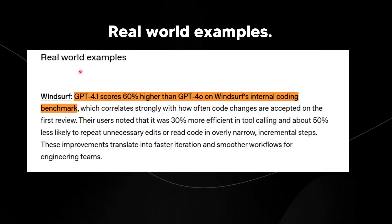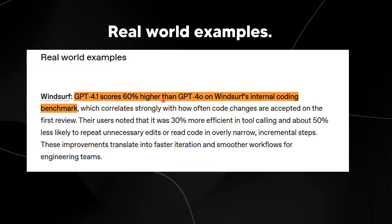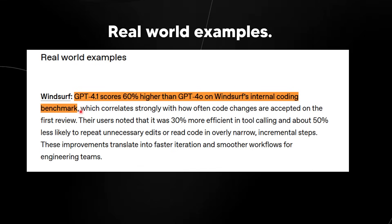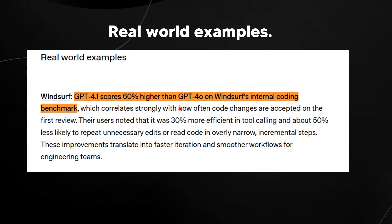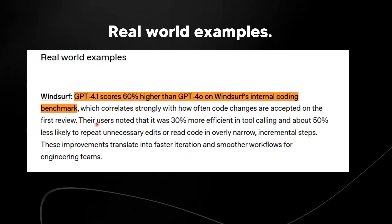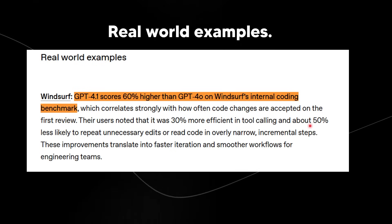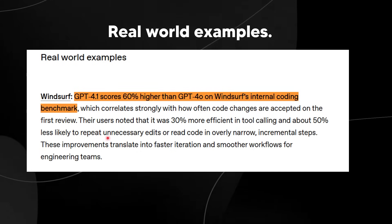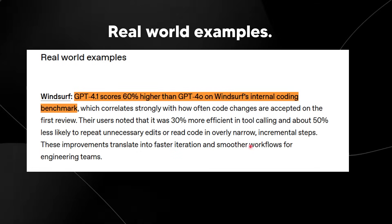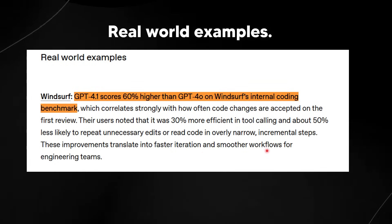For real-world examples: Windsurf found that GPT-4.1 scores 60% higher than GPT-4.0 on their internal coding benchmark, which correlates strongly with how often code changes are accepted on first review. Their users noted it was 30% more efficient in tool calling and about 50% less likely to repeat unnecessary edits or read code in overly narrow incremental steps, translating into faster iteration and smoother workflows.